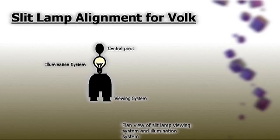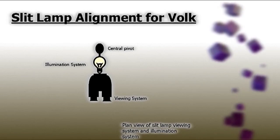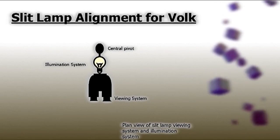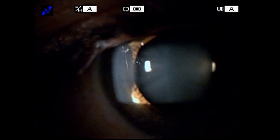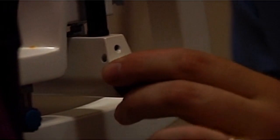We then need to make sure the illumination and viewing system are perfectly in line, one behind the other. We would use a parallelepiped beam, usually 2mm in width and with a height that matches the pupil height. We tend to set the magnification to around 10 times to start the Volk assessment.